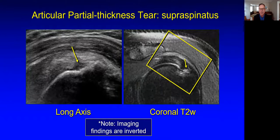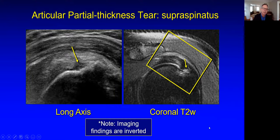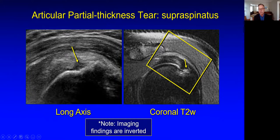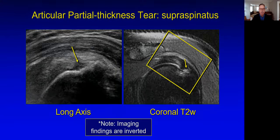Here's a partial thickness articular-sided tear. We see a well-defined defect touching the hypoechoic hyaline cartilage over the curve of the humeral head — therefore articular surface — not touching the bursal surface. Note here in the MRI, which is fluid sensitive, these images are essentially inverted: normal tendon is bright on ultrasound, dark on MR; the tear is dark on ultrasound, bright on MRI; the bone is bright on ultrasound and dark on the MR. When looking at an ultrasound image, you want to make it look like an MR image and vice versa. It's really the same pathology with ultrasound but higher resolution.